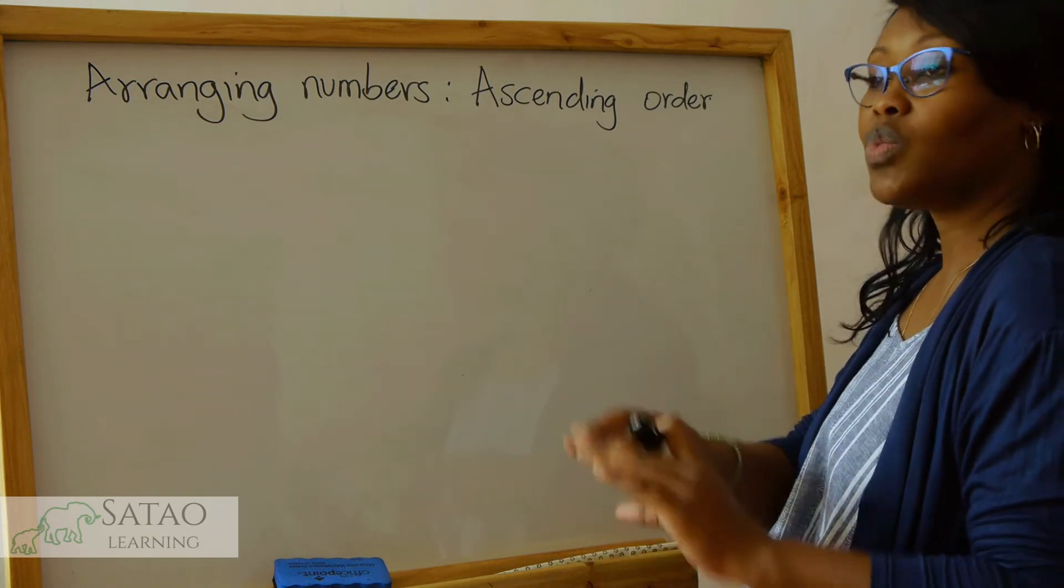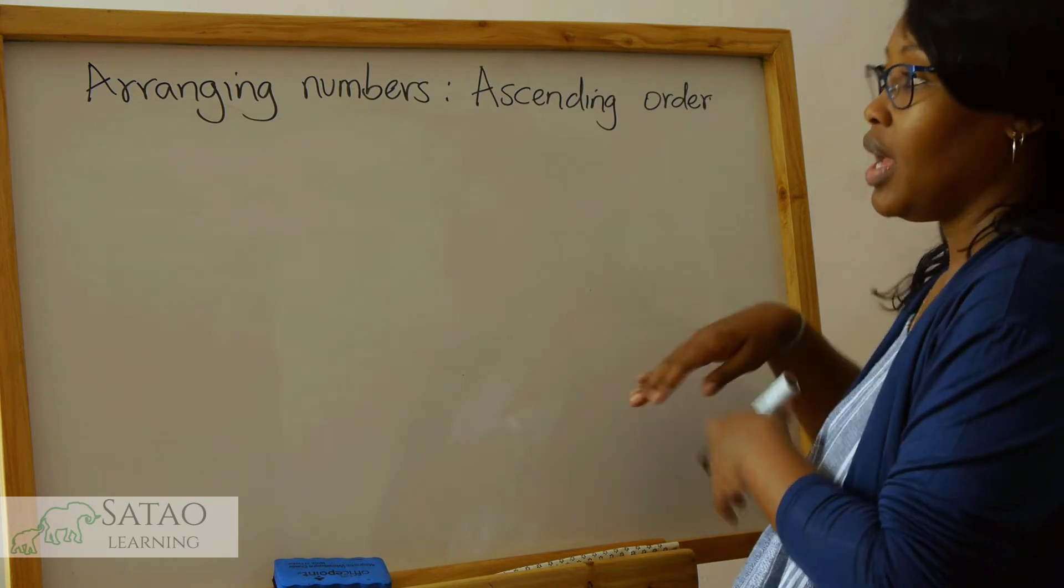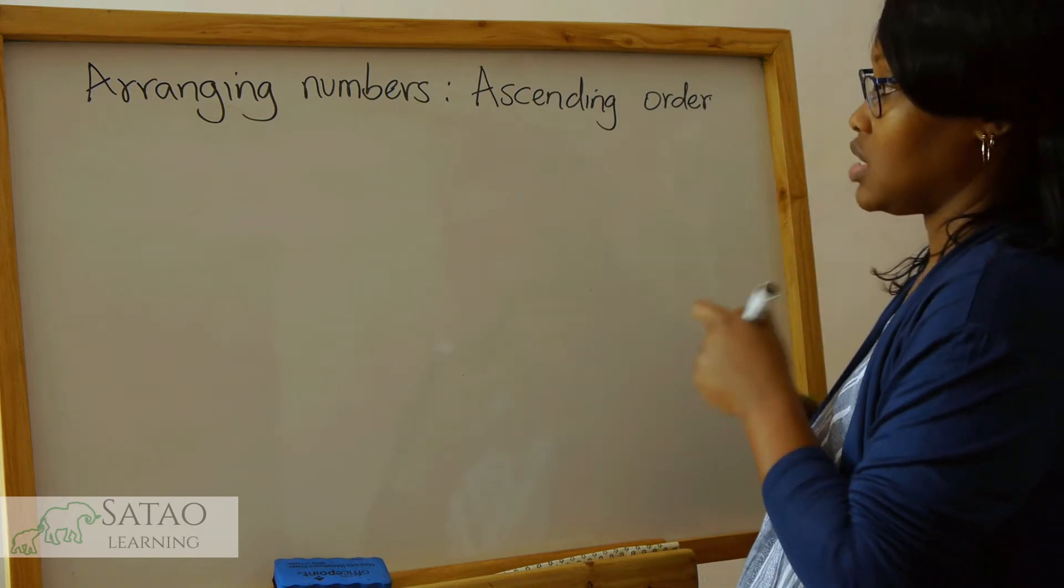So we start with the smallest number, then we go to the next number, the next number, and then the last number will be the biggest.